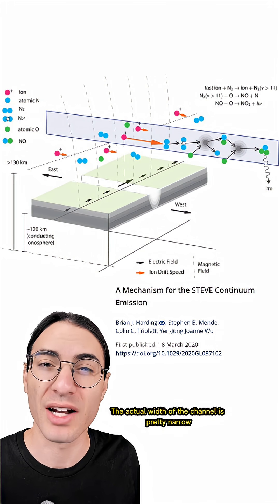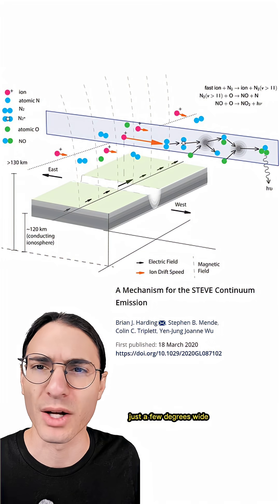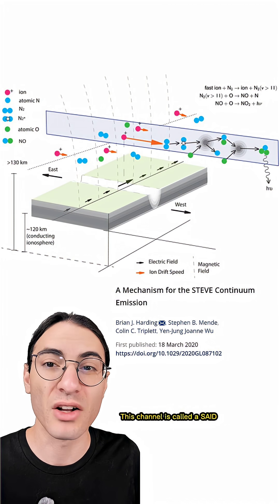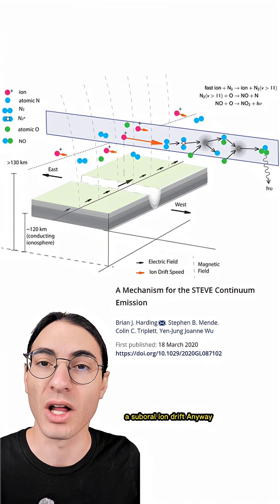The actual width of the channel is pretty narrow, just a few degrees wide which is a few hundred kilometers. This channel is called a sed, a subaural ion drift.